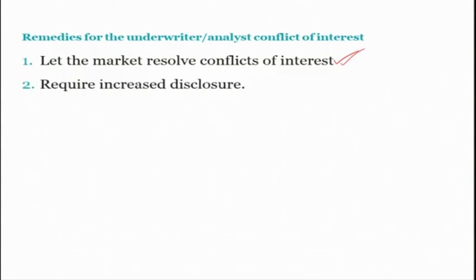The second remedy is to require increased disclosure. If the market does not provide sufficient disclosure, regulation may be necessary to cause firms to permit investors to observe whether there are any conflicts of interest behind the information provided by analysts. One solution is mandatory disclosure of the relationship between the bank and its employees and the issuing firms — this is the minimum information required. Such information would include whether the firm was a client of the bank's underwriting or other departments, or any conflicts of interest for individual analysts.